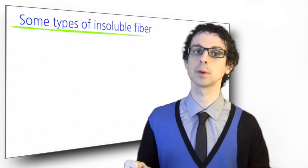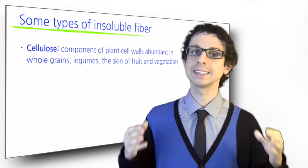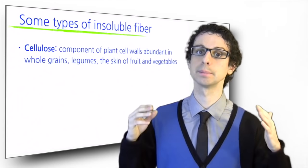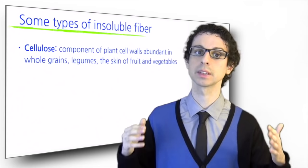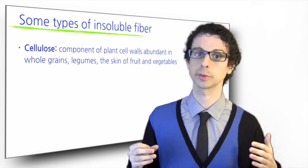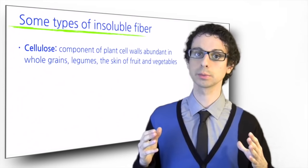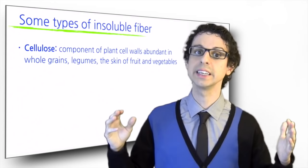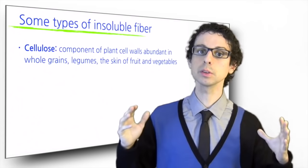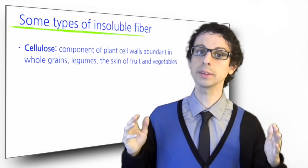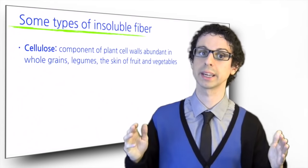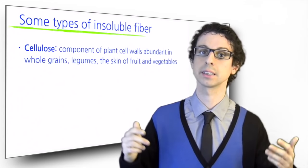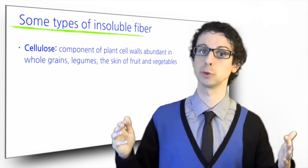These are some important examples of insoluble fibers. Cellulose is a typical component of plant cell walls and is abundant in whole grains, legumes, and the skin of fruit and vegetables. It is a chain of glucose molecules, much like starch, although cellulose is completely linear, but the bond between glucose molecules is different and we don't have any digestive enzyme to break it down. Thus cellulose travels undigested through our small intestine and we cannot extract its glucose.